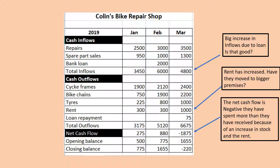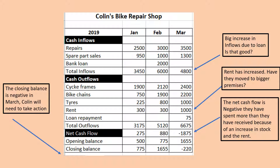Looking down here, their net cash flow is negative £1875. We've talked about the rent going up, but that is a much bigger increase than just the rent. If we look back, we can see that their stock figures have gone up a lot. So the negative cash flow is because they paid more on rent and more on stock. This leaves us with a closing balance which is negative in March, and Colin will need to do something about that in the future.